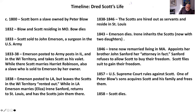While at Fort Snelling, Scott married Harriet Robertson, a slave owned by the Indian agent stationed at the fort. The agent was also a justice of the peace and actually performed a marriage ceremony entered in the official records. Emerson thereafter acted as Harriet's owner. In the South, no such ceremony would have been performed, because no slave state legally recognized slave marriages — marriage was considered a contract, and slaves had no right to enter into a legally enforceable contract.